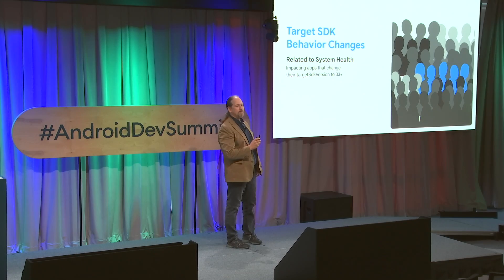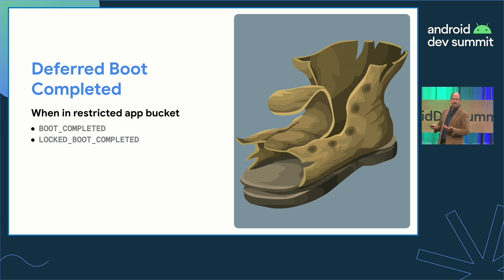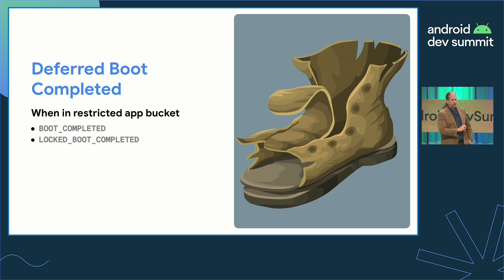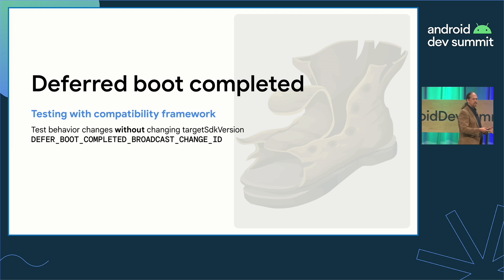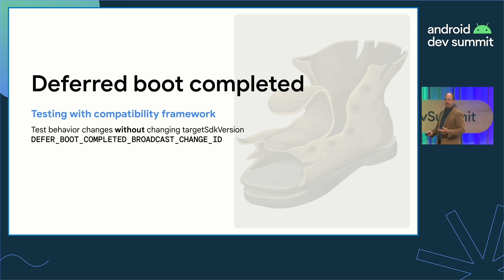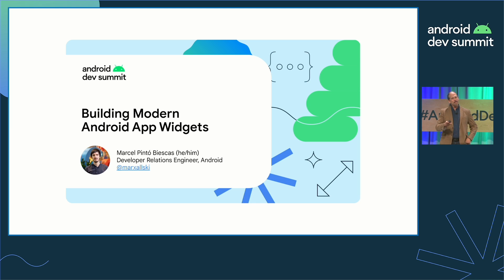There are system health behavior changes that only occur when targeting SDK 33 as well. Once your app is in the restricted state, the system doesn't deliver the boot completed broadcast or the locked boot completed broadcast until your app has been started for other reasons. To make it easier to test behavior changes, we have the compatibility framework, which lets you toggle specific behavior changes on and off without changing your app's target SDK version, using either Settings or ADB. You can test this particular one by setting the DEFER_BOOT_COMPLETED_BROADCASTS change ID option. Note that your app will never enter the restricted state if the user adds your app widget — so check out what Marcel has to say about modernizing app widgets.